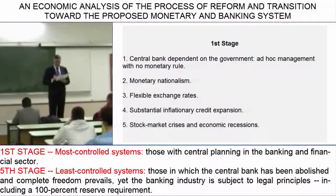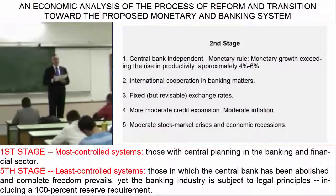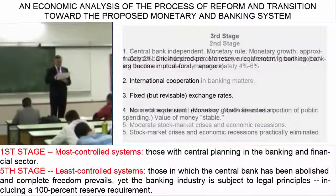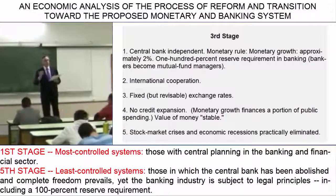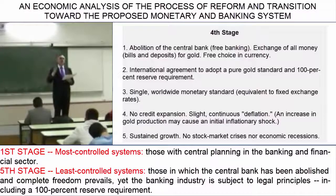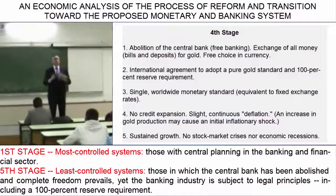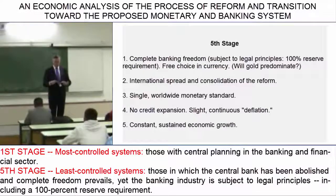The chart goes from right to left. The first stage consists of a system like the current one. In the second stage, some initial banking independence appears and monetary growth falls. In the third stage, a 100% reserve requirement is established, but we still have public money, and growth reaches around 2%. In the fourth stage, bills and deposits are exchanged for gold.